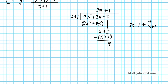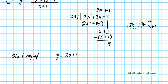Can you see what the slant asymptote is in this result? It is the polynomial portion of your result after dividing — that's the slant asymptote. It's normally a line. So our answer is going to be y equals 2x plus 1. This is the slant asymptote for the original function.